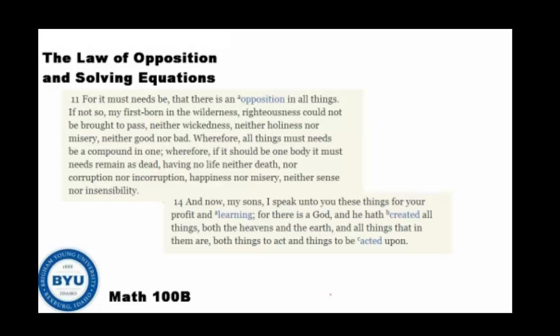There are many good verses in chapter 2. I want to talk about a few. Verse 11 says: 'For it must needs be that there is opposition in all things. If not so, my firstborn in the wilderness, righteousness could not be brought to pass, neither wickedness, nor holiness, nor misery, neither good nor bad. Wherefore, all things must needs be a compound in one. Wherefore, if it should be one body, it must needs remain as dead, having no life, neither death, nor corruption, nor incorruption, happiness, nor misery, neither sense nor insensibility.'